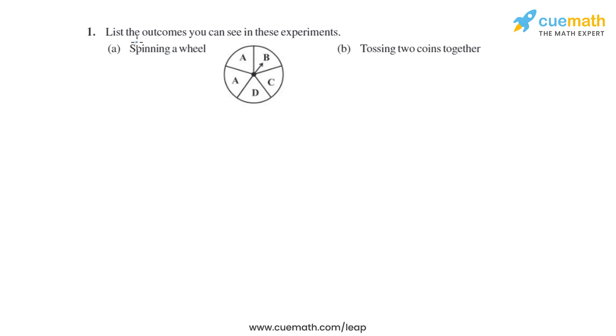Question one of this exercise says list the outcomes you can see in these experiments. Outcomes are basically possible results of an experiment. So when we are tossing a coin, there are two possible outcomes: either we will get tail or we will get head.